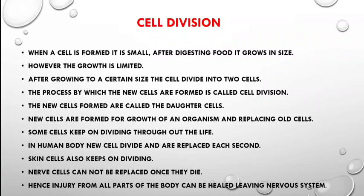Nerve cells cannot be replaced once they die. Almost all cells in the body can be replaced, but nerve cells present in our brain cannot be replaced once they die. Once the nerve cells die, the organism also dies. Hence, injury from all parts of the body can be healed, leaving the nervous system. Neurons cannot be replaced by new cells — they keep on working throughout our life.